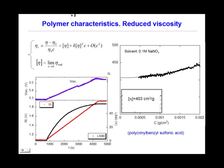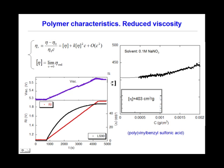Shown here are data from an automatic SEC experiment where polymer concentration was varied. Viscosity increases from the solvent level to the maximum concentration. The refractive index signal increases as polymer concentration increases, and light scattering also increases as more polymer is introduced. On the right is shown reduced viscosity versus concentration, and extrapolation to zero concentration gives the intrinsic viscosity.